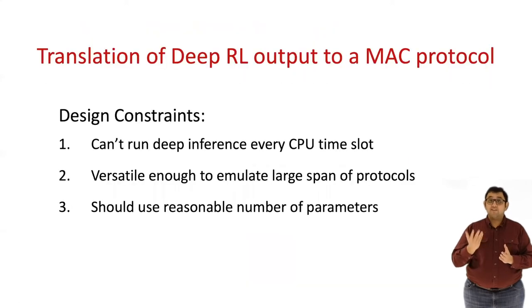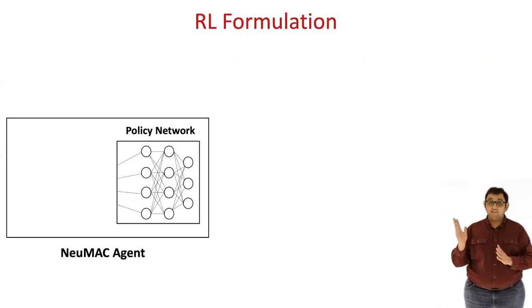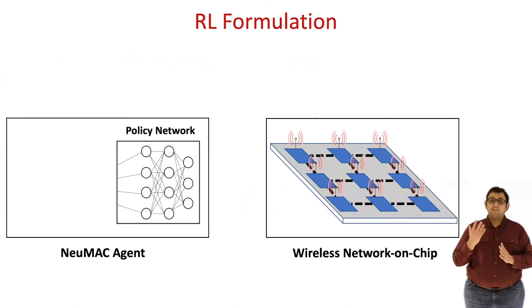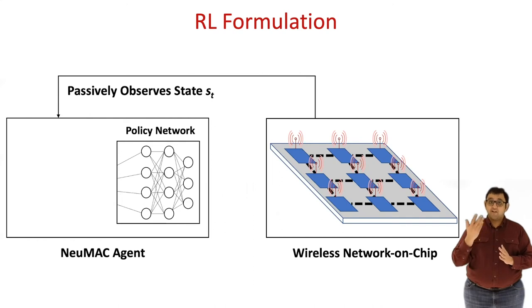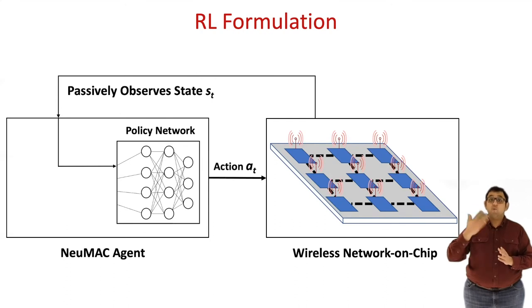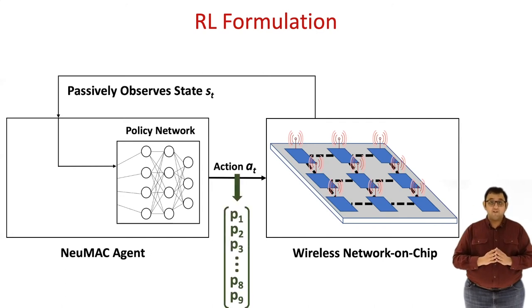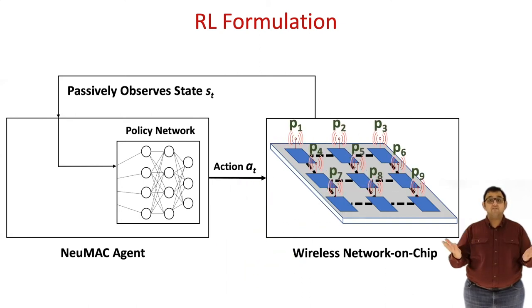We can see that our two-layer protocol design satisfies all three constraints. The next question is how do we train this two-layer protocol using RL? Here is newMAC's deep RL agent and here is the wireless NOC. The agent keeps collecting traffic statistics by passively listening on the wireless channel and recognizing collisions, idle slots, and successful transmissions. These statistics are encoded in the state S_t. Then at periodic intervals, newMAC's deep RL network processes S_t and generates the new protocol to deploy on the NOC. This protocol is parameterized by the probability values from our two-layer model, and the NOC updates the values of the P_i's which becomes the new MAC protocol.